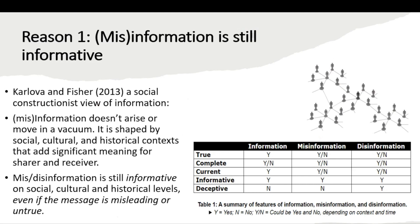So why and how do people share misinformation and disinformation online or in other contexts? The first thing I want to cover is that while misinformation and disinformation can sometimes be far-fetched — and in some cases easily fact-checked — and sometimes the people sharing it will even tell you they know it may not be truly accurate, people still share it because it is information that has meaning to folks. It has meaning to the sharer, but also to the person it's being shared with. There's value to us when we share this kind of information.